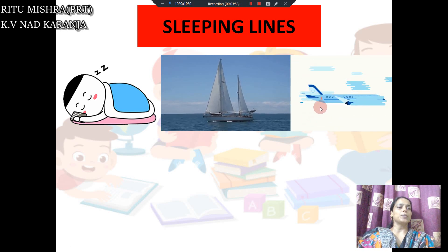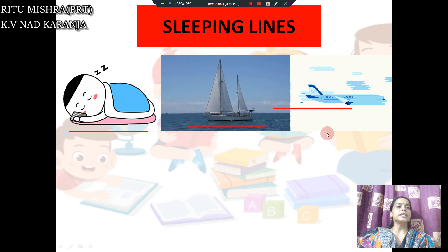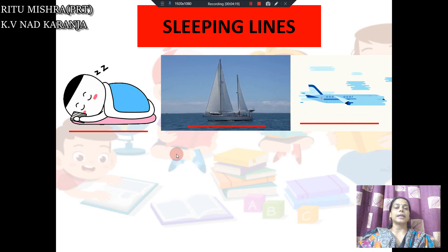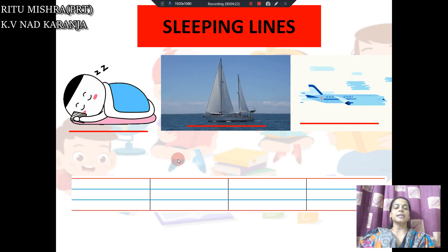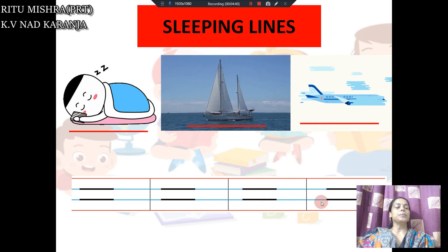There is a plane — an aeroplane — and how does it fly? It also moves in a completely straight line. So if we see the pattern: the baby who is sleeping is lying this way — sleeping line — and the boat is moving this way, and the aeroplane is flying this way. That movement is the sleeping line. So again let us see, in the four-line notebook, how we make the sleeping line. This way you have to draw the sleeping line.